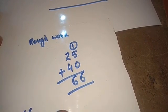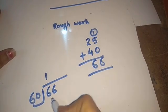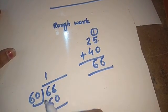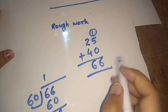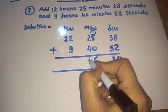So, using division: 60 into 66 goes 1 time with remainder 6. So we write 6 and 1 is our carry.